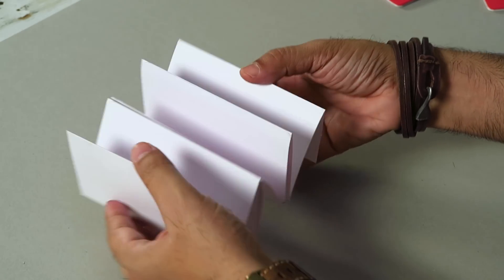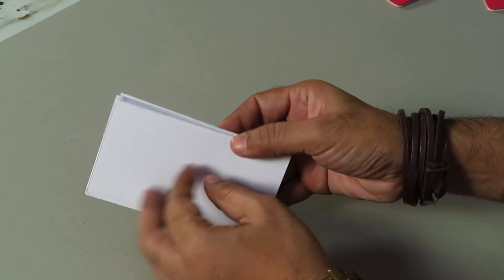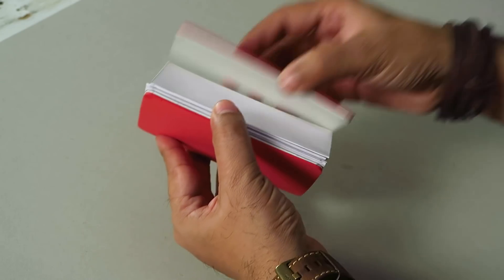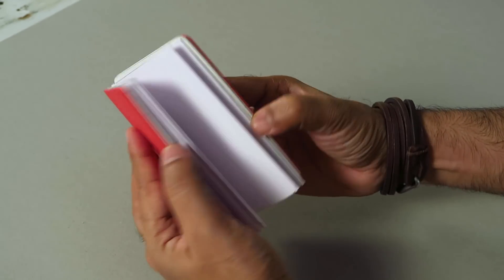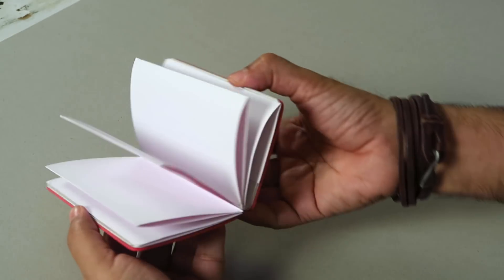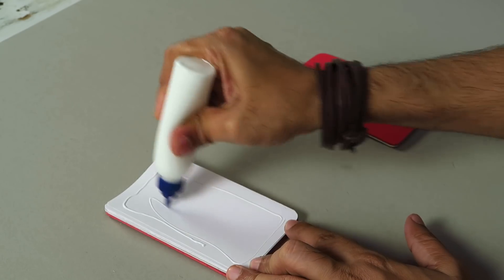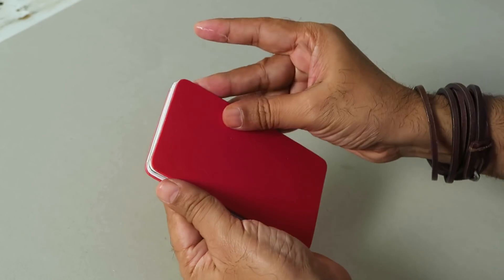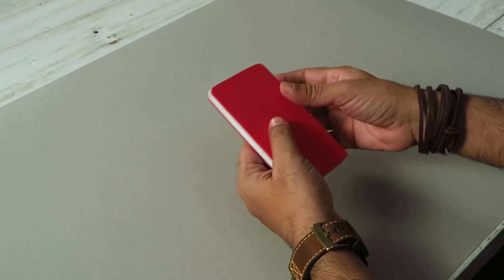You can see we have this accordion fold like that. So now you can just place this whole thing between the covers like this and you'll have a small diary or a mini diary. So now what I'm going to do is I'm going to stick the pages, and with that our diary is done.